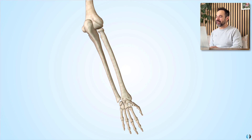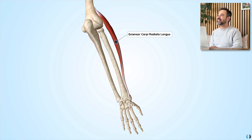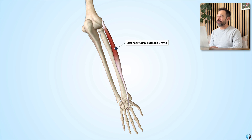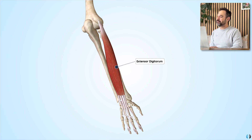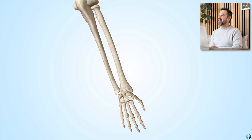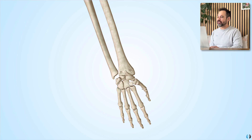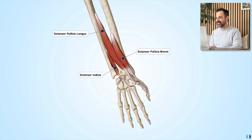We're going to be talking about these key muscles that you can see on the screen, including extensor carpi radialis longus, extensor carpi radialis brevis, extensor carpi ulnaris, extensor digitorum, extensor digiti minimi, and then a couple of smaller muscles closer to the wrist: extensor pollicis longus, extensor pollicis brevis, and extensor indicis.